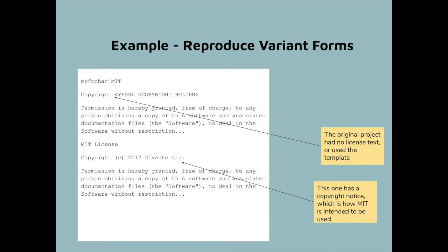First, we're going to reproduce the variant forms — the MIT license. We have one example that uses the template and one that uses an actual copyright notice. The second one is the correct way to use MIT, but not all projects properly do this. I don't have enough space on this slide to put both of the licenses, but the ellipses mean the entire license is there. We've listed each MIT license — one in template form and one in filled-out form — and put both in the notice file.